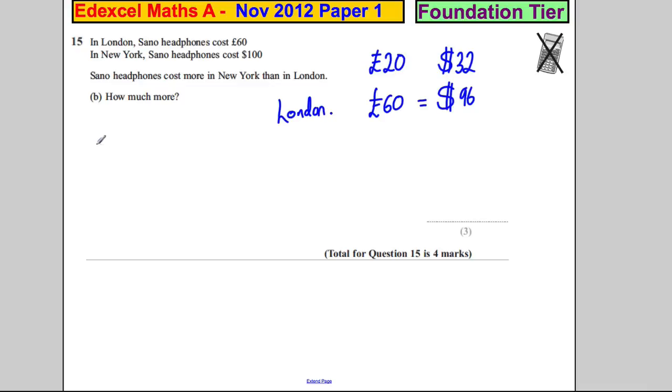So therefore, how much more? The answer is clearly 100 subtract the 96, which is simply $4. Now, there's no units here, so be careful to write your dollars. And $4 is your answer in that question.